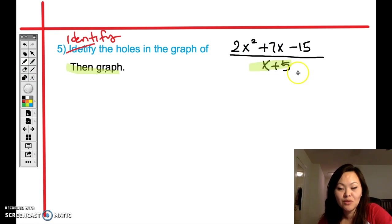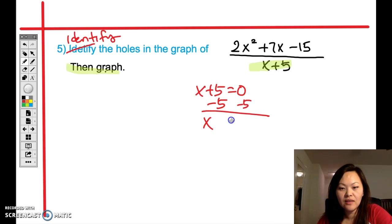It says identify the hole, so basically you only have to figure out what the vertical asymptote is. I already highlighted x plus 5, and if you set that equal to 0, then you subtract 5 from both sides and you'll be left with x equals negative 5. That's your vertical asymptote, and so this is going to be where the hole is. That's the answer.